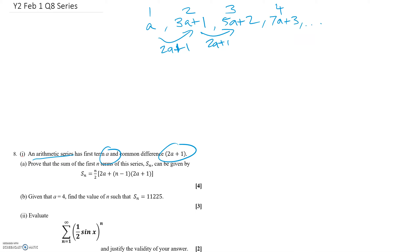The fourth term is 7a plus 3, and so on. Looking at the pattern: if you take the term number n and multiply by 2 then subtract 1, you get the coefficient of a. So the nth term is (2n−1)a, and for the constant on the right, you subtract 1 from n, giving (n−1).